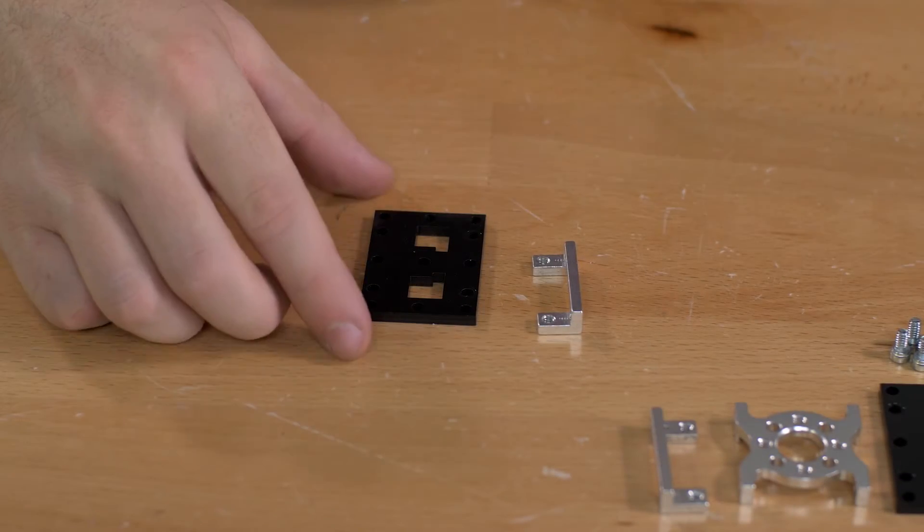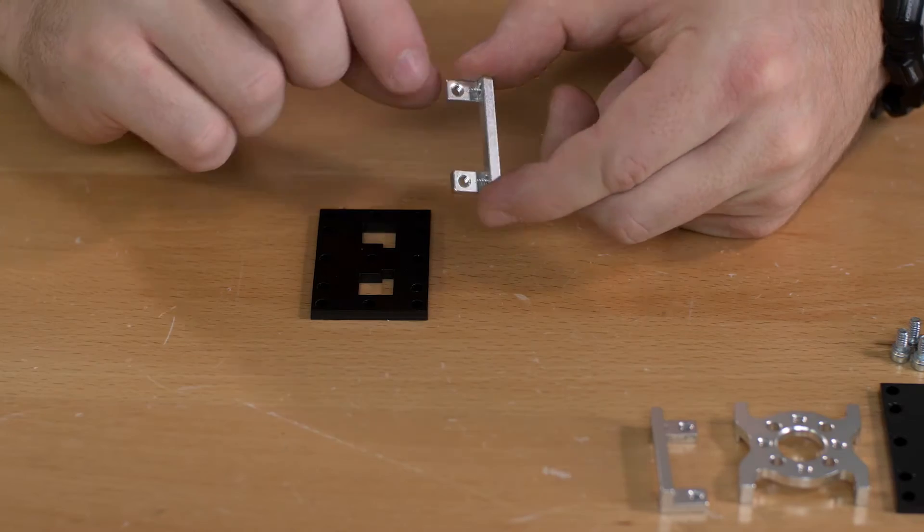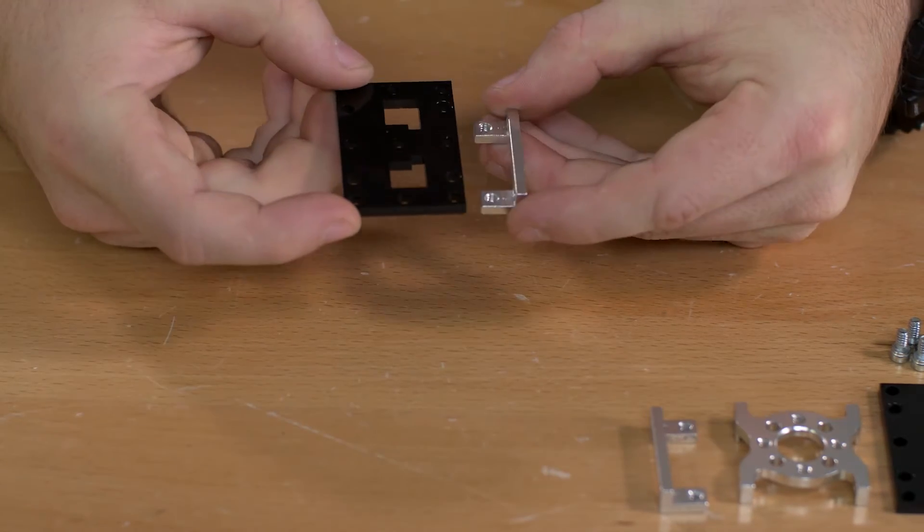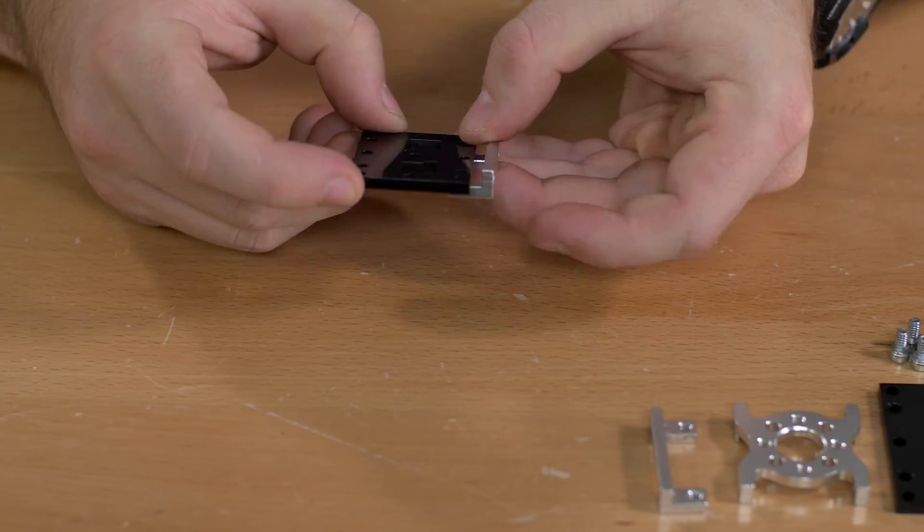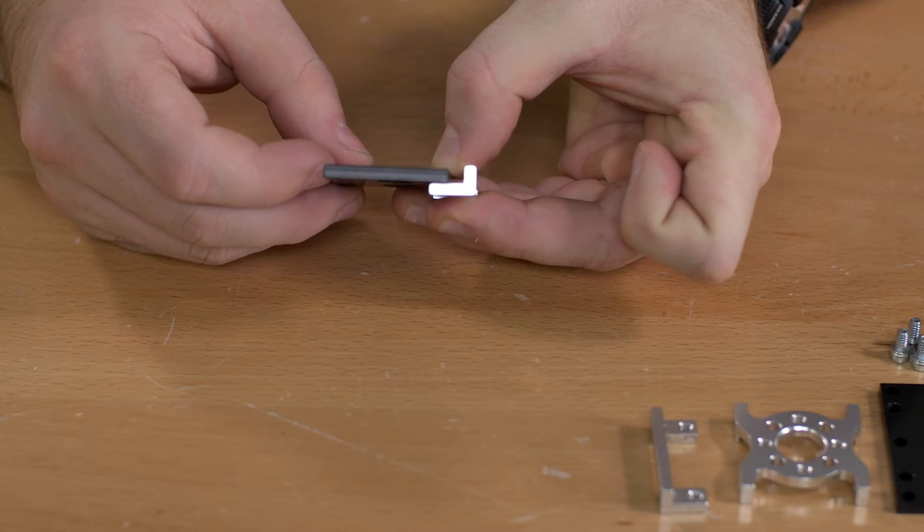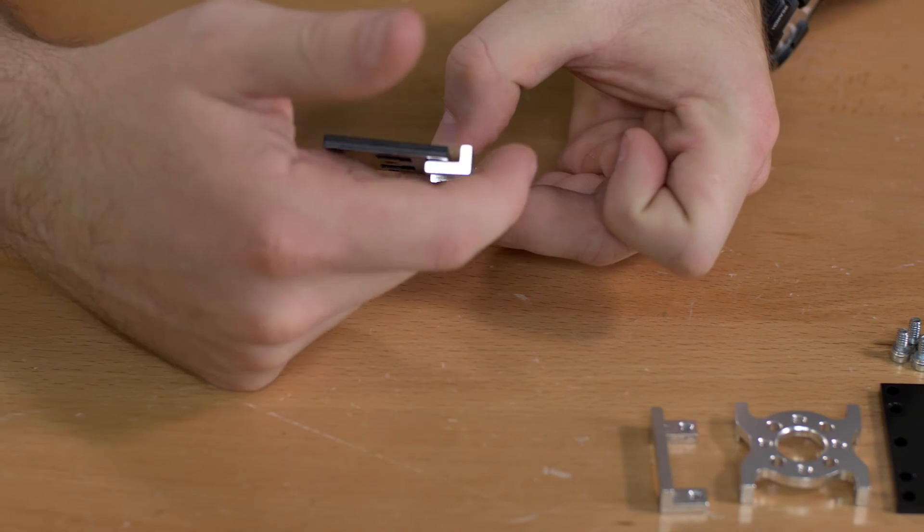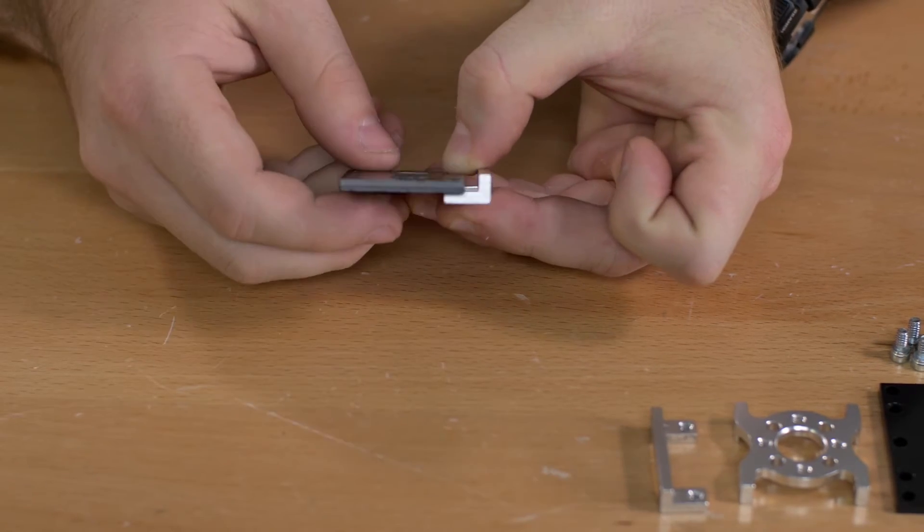The next step is going to be to combine the side mounts with the plastic pieces. They're going to go together like this so that you have the plastic sitting inside of this L indention on the plastic piece.